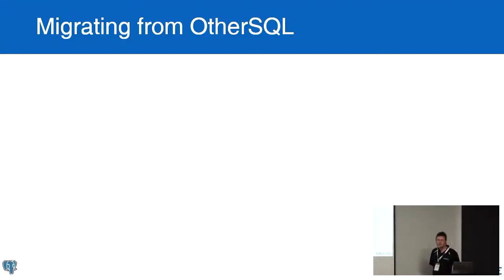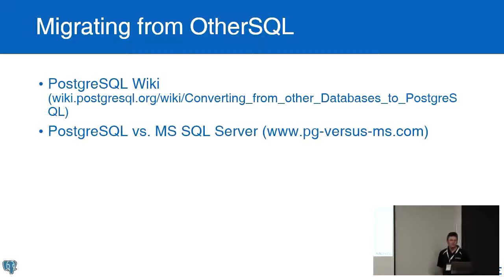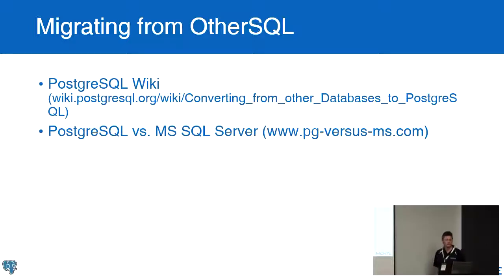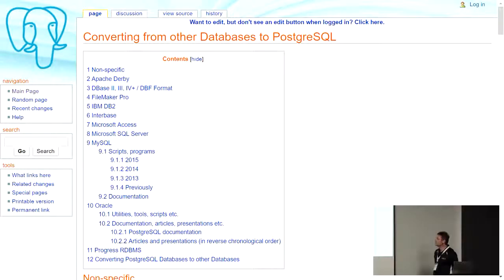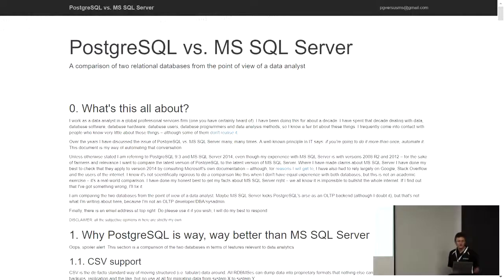If you want to migrate from other databases like Microsoft SQL or Oracle, the Postgres Wiki has a page dedicated just to that, and there is some content on the internet comparing Postgres to Microsoft as well. This is the Postgres Wiki page that talks about migrating — there's lots of instructions for a whole bunch of databases: MySQL, Microsoft, Oracle, et cetera. So if you need to port your data to Postgres, that's perhaps a good place to start.